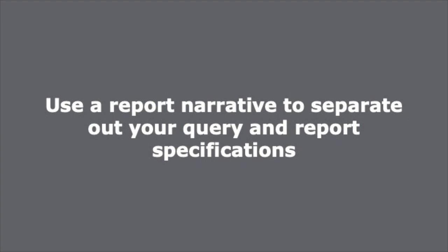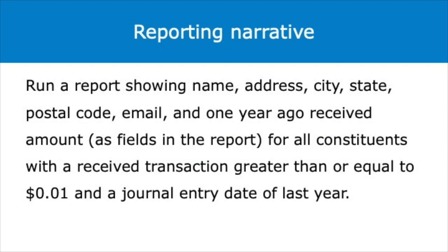An eTapestry reporting narrative is the best way to simplify the reporting process. Simply write out the specifications of the report you want in a text editor or Word document, then separate the components of your narrative into the query and the report. For the all donors who gave last year report we've built in this video, the reporting narrative may look something like this: we want to run a report showing name, address, city, state, postal code, email, and one year ago received amount as the fields in the report, for all constituents with received transaction greater than zero dollars in a journal entry date of last year, which is our query.